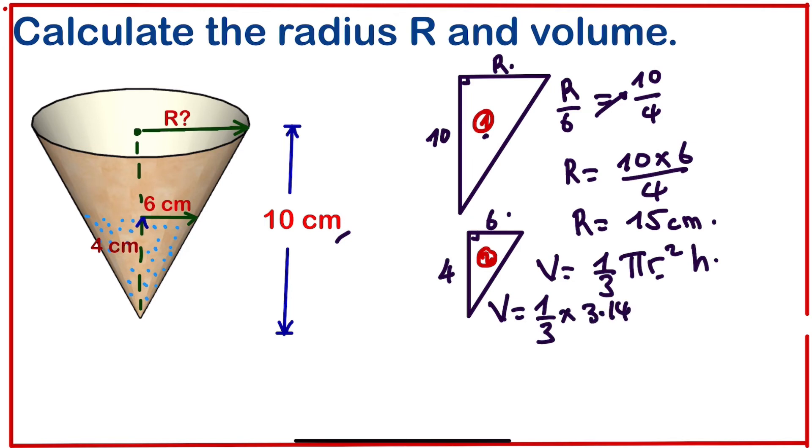The radius is 15, so we are going to have 15 times 15 times the height of this cone. The height is 10, so times 10.